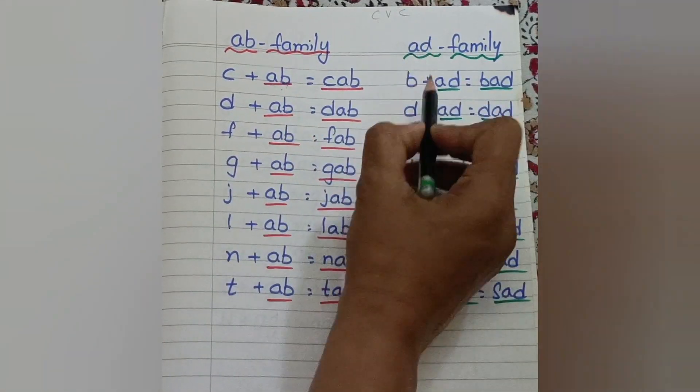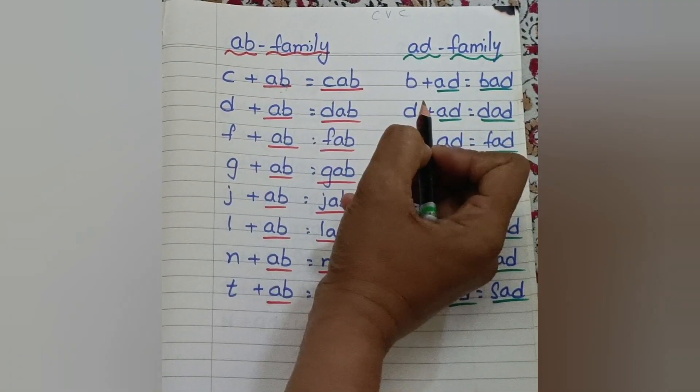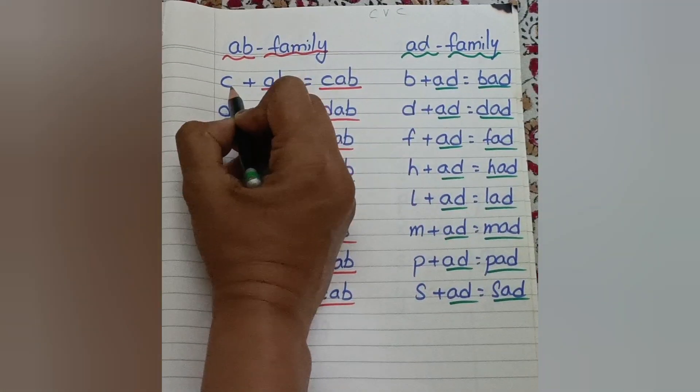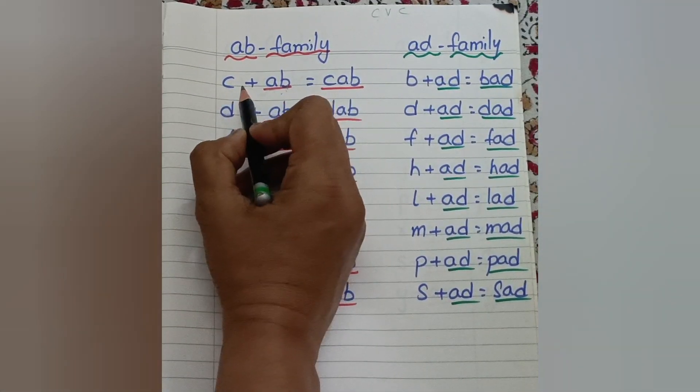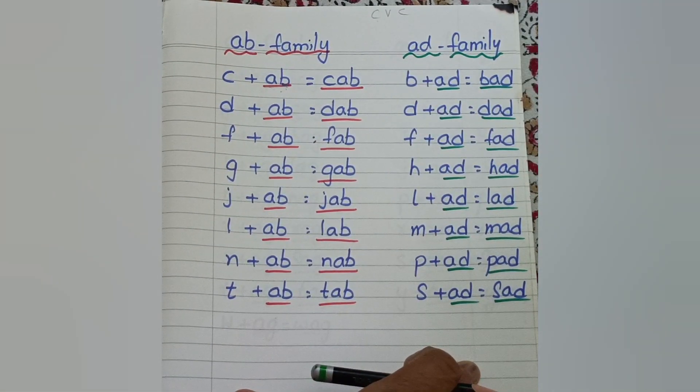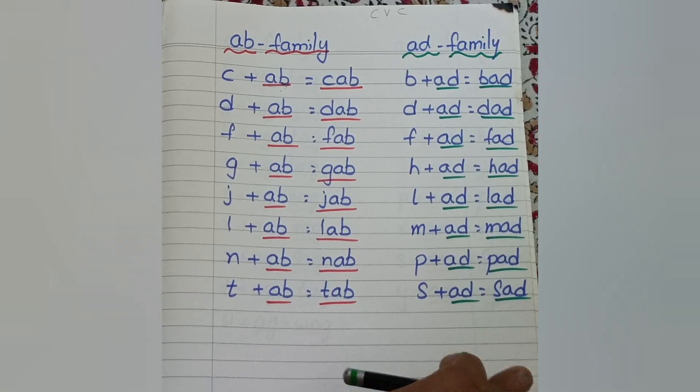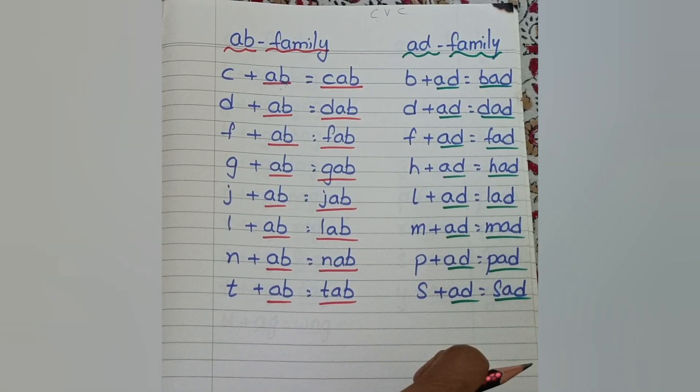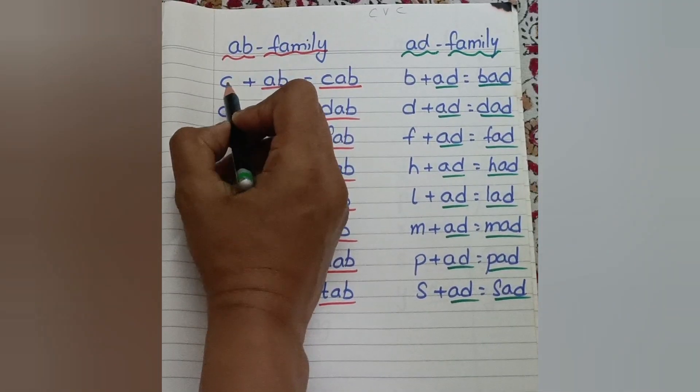Then later on you need to take these individual letters because they already know the sounds of Ab, Ad, An, Am. They will be able to read them directly. Now let's see how we can teach. And I would like to suggest, take a screenshot of this page because I'm going to cover all the A family words in today's video. Let's start.